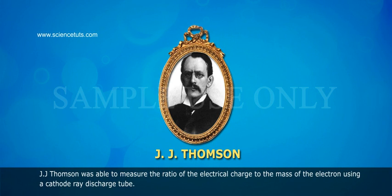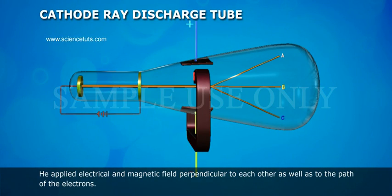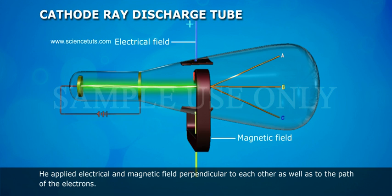J.J. Thomson was able to measure the ratio of the electrical charge to the mass of the electron using a cathode ray discharge tube. He applied electrical and magnetic fields perpendicular to each other as well as to the path of the electrons.